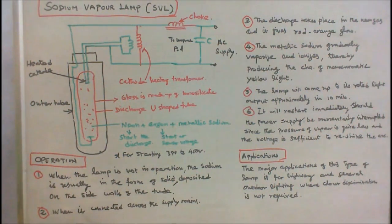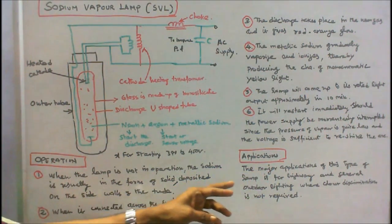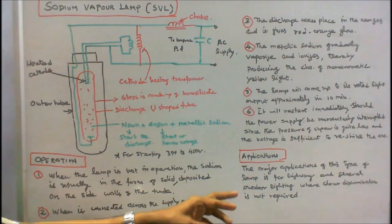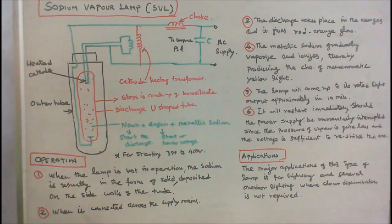The major application of this type of lamp is for highway and general outdoor lighting where color discrimination is not required.